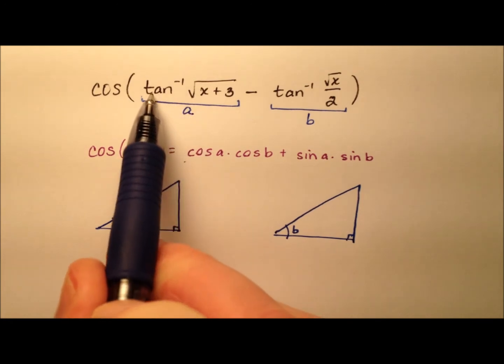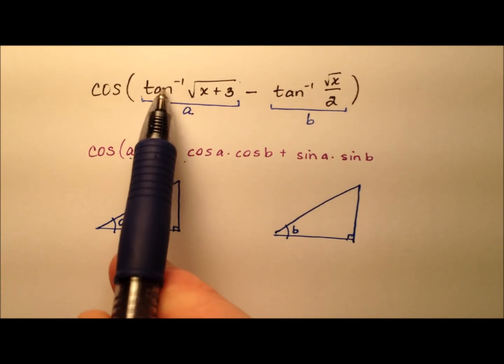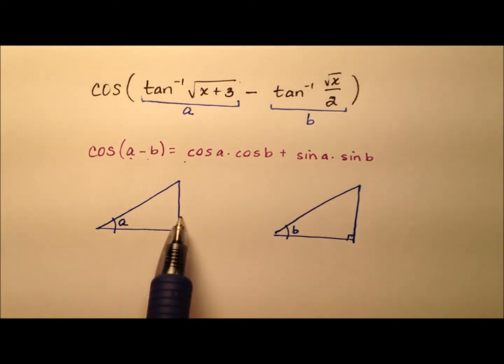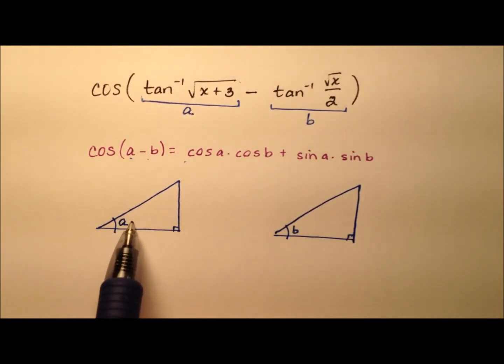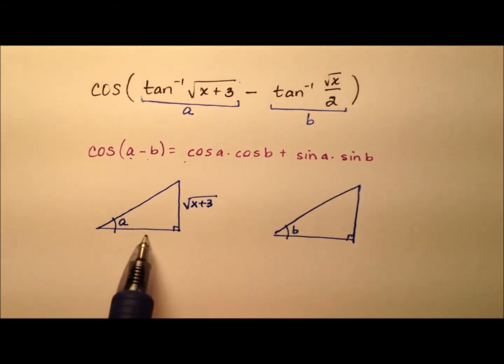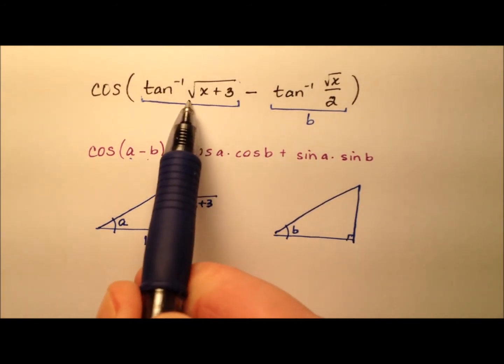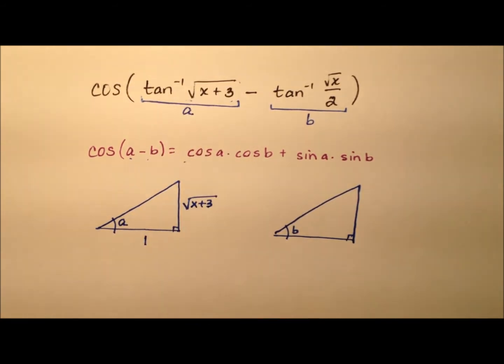So A is going to be the inverse tangent of this radical x plus 3. Remember that tangent is opposite over adjacent. So from angle A, we have the square root of x plus 3 over 1. And we know it's over 1 because it's not a fraction, so it's understood that the denominator is 1.